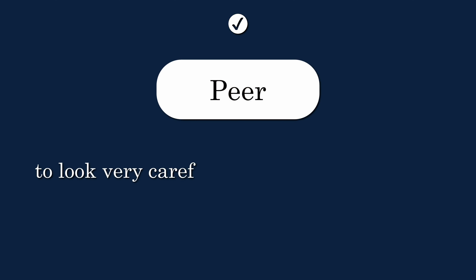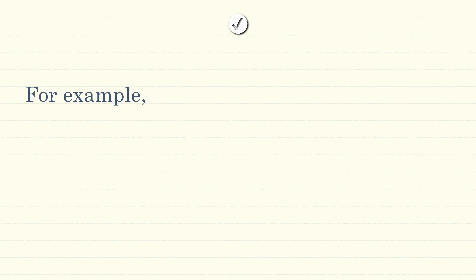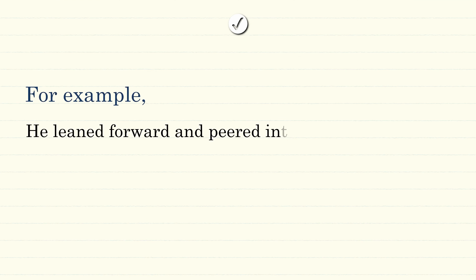Peer. Peer means to look carefully at something because it is difficult to see clearly. He leaned forward and peered into the gloom.